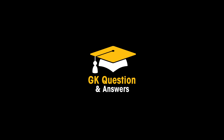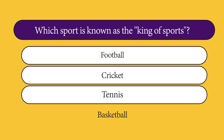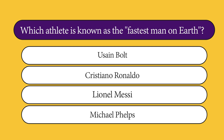Hello everyone, welcome to our YouTube channel. Today's first question is: which sport is known as the king of sports? Football, cricket, tennis, or basketball? The answer is basketball. Which athlete is known as the fastest man on earth? Usain Bolt,